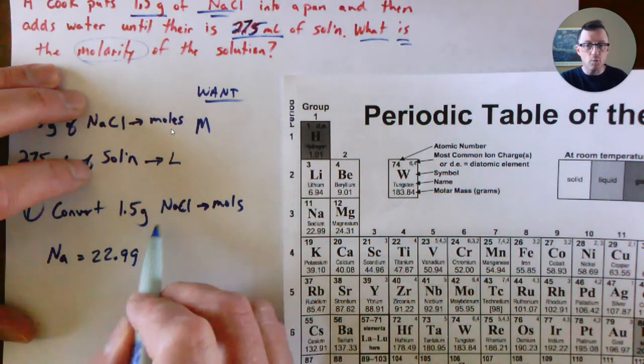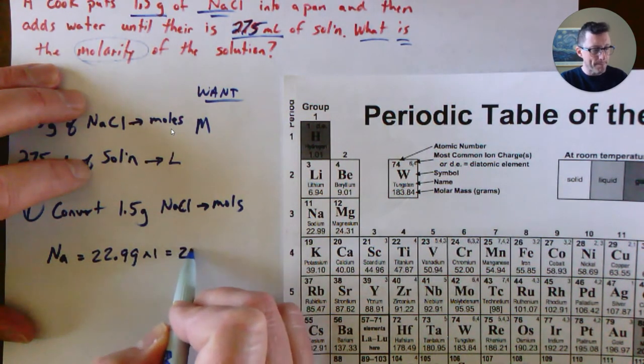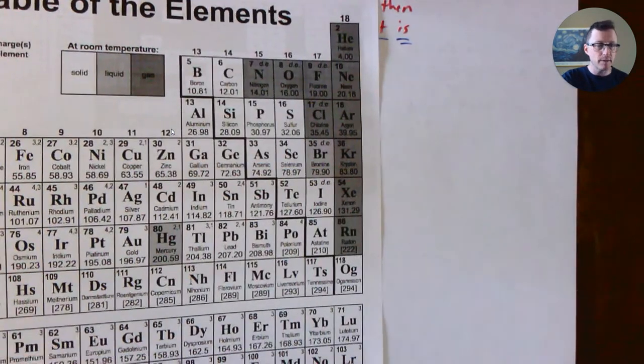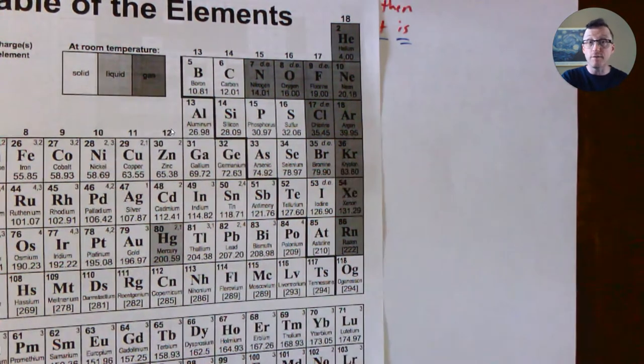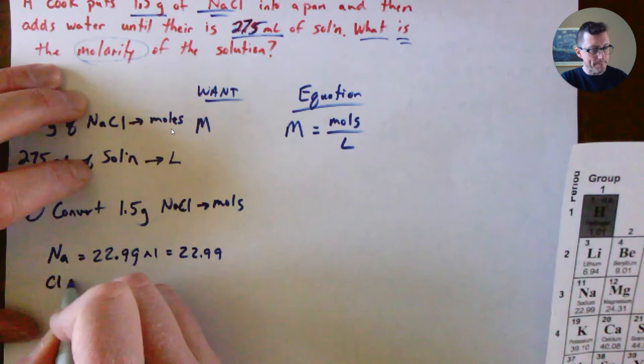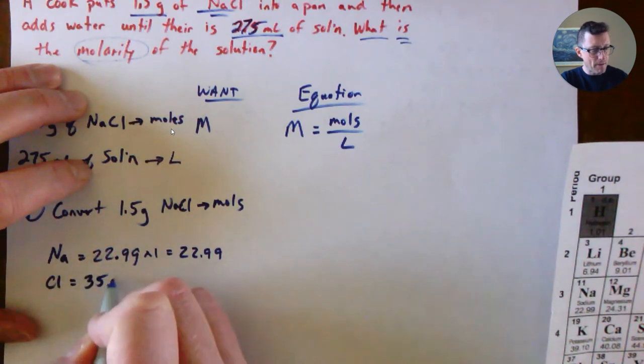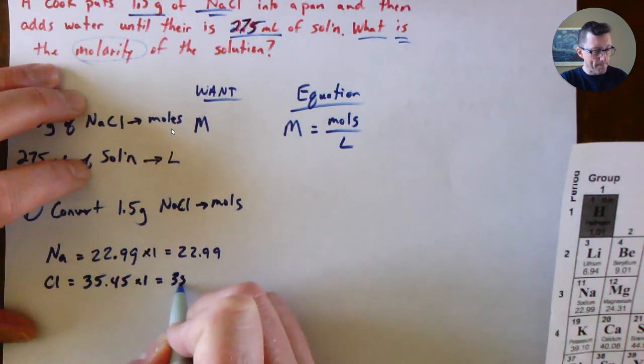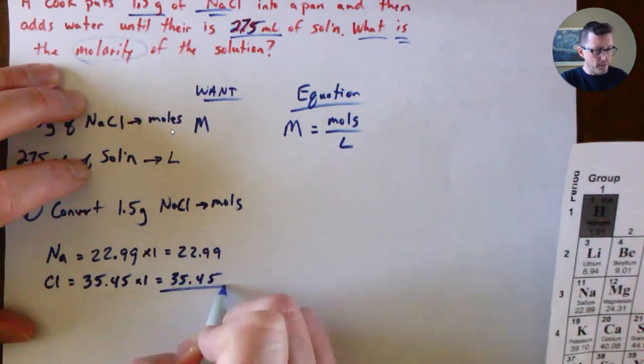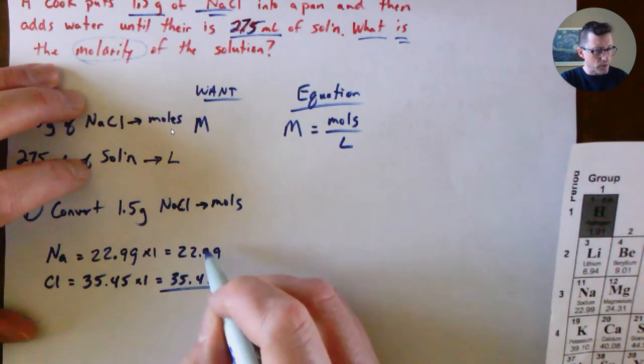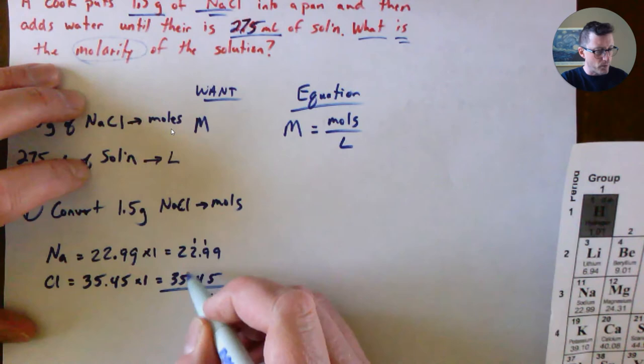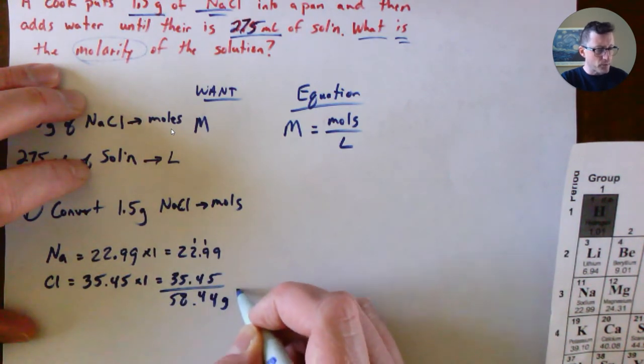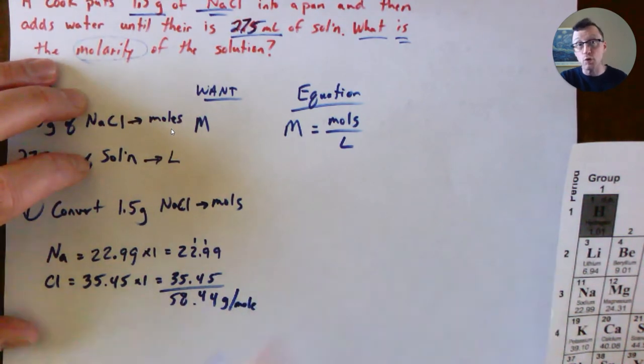That's how many grams you would have if you had one mole. Our formula only has one of those, so multiply by one. Then for Cl, which is 35.45, we only have one, so multiply that by one. You simply add them together: 22.99 plus 35.45 equals 58.44 grams per mole.